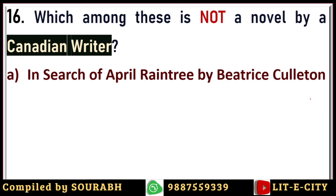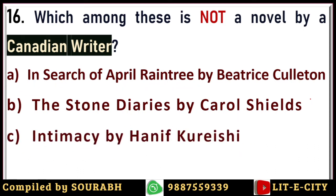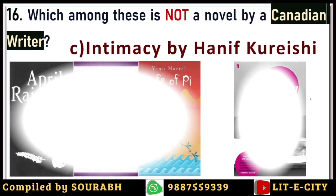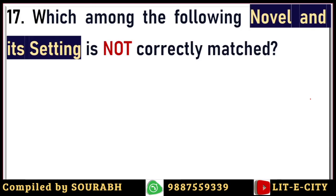Next question: which among these is not a novel by a Canadian writer? Options are In Search of April Raintree by Beatrice Culleton, The Stone Diaries by Carol Shields, Intimacy by Hanif Kureishi, and Life of Pi by Yann Martel. Canadian literature is considered part of Commonwealth or New Literatures in English. The correct answer is Intimacy by Hanif Kureishi, who is a Pakistan-born British writer. The other three — Culleton, Carol Shields, and Yann Martel — are all Canadian writers.